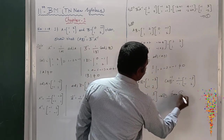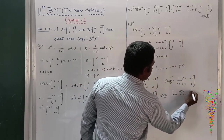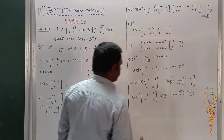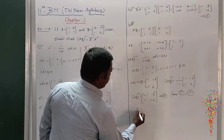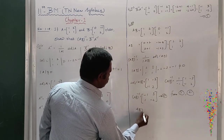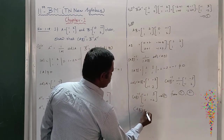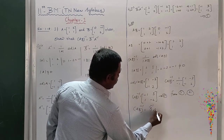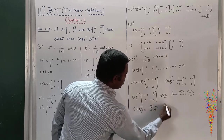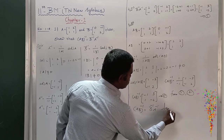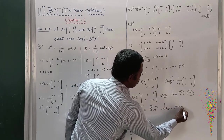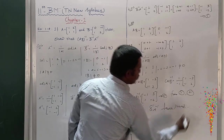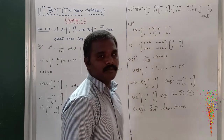Comparing equation number 1 and equation number 2, from 1 and 2, (AB) inverse equals B inverse into A inverse. Hence it is proved. Thank you.